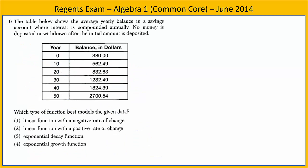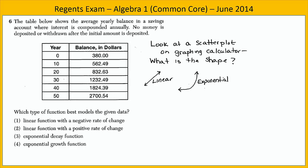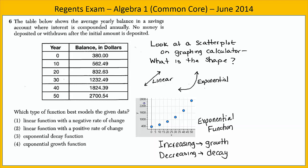In exercise six, we're given a table that shows the average yearly balance in a savings account where interest is compounded annually. No money is deposited or withdrawn after the initial amount is deposited. And we're shown a table where x is the years and y is the balance in dollars. We're asked which type of function best models the given data, a linear function or an exponential. Let's take a look at the scatter plot on the graphing calculator and determine what the shape is. By looking at the shape, we'll know if it's linear or if it's exponential. The scatter plot reveals an exponential function. We see that the function is increasing. When dealing with exponential functions, an increasing function is known as exponential growth. A decreasing function is known as exponential decay. Looking at the choices carefully, we see that we have choice four, an exponential growth function.